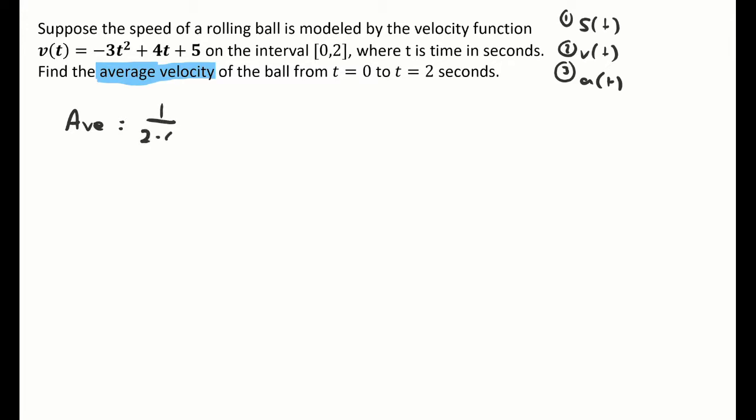Average value is 1 over b minus a times the integral from a to b of your function. Why is average velocity an average value question? When I talk about the value of a function, that's the output — the y value. The output of a velocity function is velocity. Therefore, finding the average value of this function means finding the average velocity. The wording matches the output of the given function v(t), so it's an average value question.